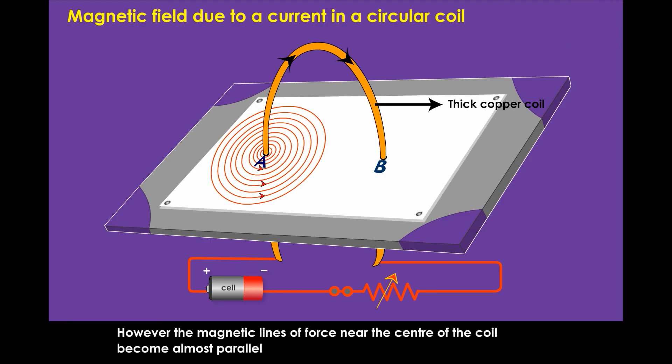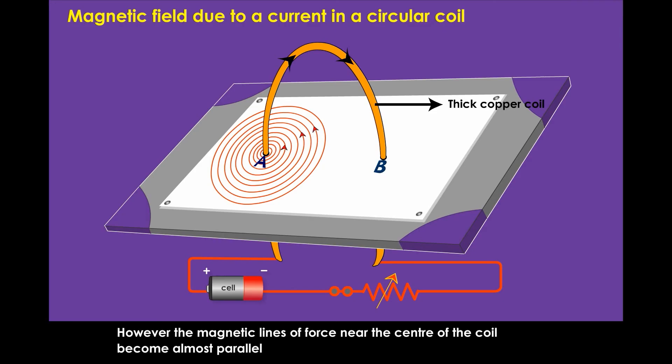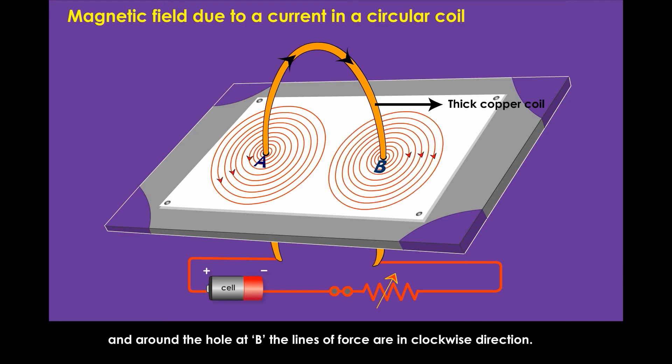However, the magnetic lines of force near the center of the coil become almost parallel and around the hole at B, the lines of force are in clockwise direction.